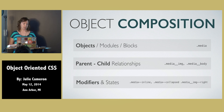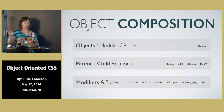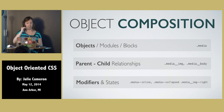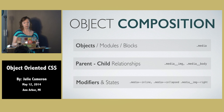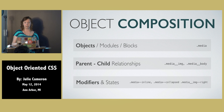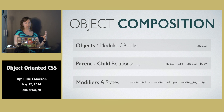The third side of this object composition is the modifiers and states. We want to be able to say: I want a media object, but I want to be able to put multiple media objects in the same row rather than stacked on top of each other. So maybe we throw an 'inline' modifier on that class. Alternatively, you could also modify the nested elements within. For example, 'media-image-right' — instead of that image being on the left side like it usually is in the status line, let's move it to the right.